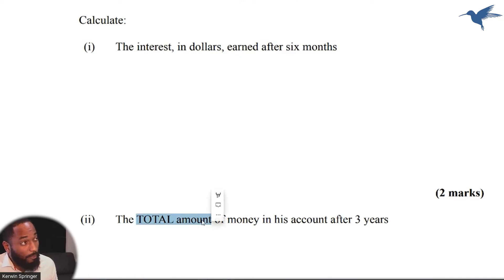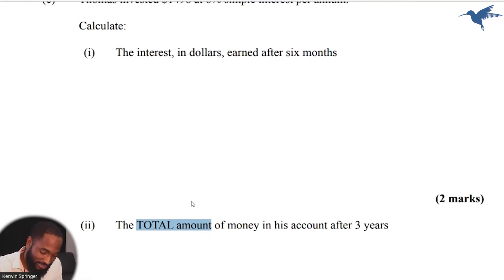They are saying total amount, not just simple interest. So first let's find the simple interest. Once again, I will copy and paste my simple interest formula. I will establish what I have. The principle remains the same. The only thing that is changing really is the years, the time.